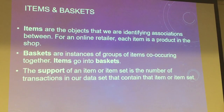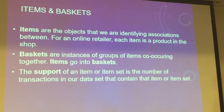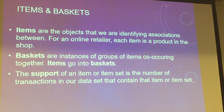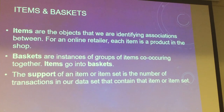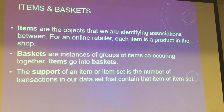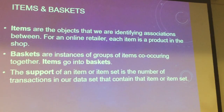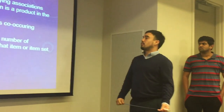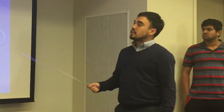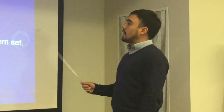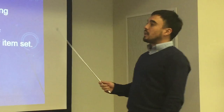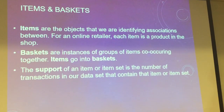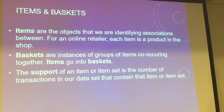This is very basic, but here are the concepts of items and baskets. Items are the objects that we are identifying associations between. For an online retailer, each item is a product in the shop, which is pretty straightforward. Baskets are the instances of groups of items co-occurring together — so items go into baskets, like your Amazon shopping basket.